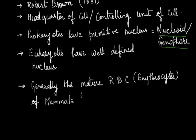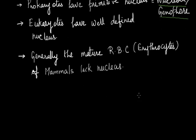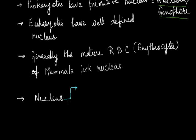RBC means red blood cells or erythrocytes. Now, structurally the nucleus can be divided into four parts. We will discuss them one by one. The first part of the nucleus is the nuclear membrane or nuclear envelope, which is also known as the karyotheca.